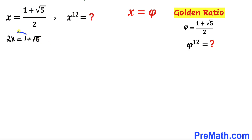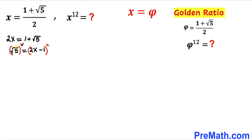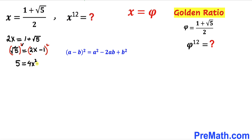Now let's move 1 to the other side to isolate the square root of 5, so square root of 5 equals 2x minus 1. Let's undo this square root by squaring both sides. The left-hand side gives us 5, and applying the identity (a minus b)² = a² minus 2ab plus b² on the right-hand side gives us 4x² minus 4x plus 1.